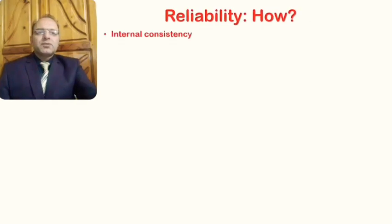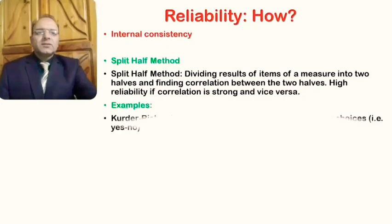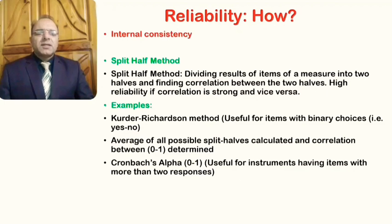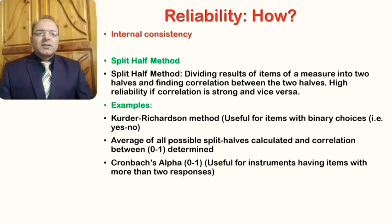Moving on to the how question: how do we find that a particular instrument has internal consistency? There are a number of ways to establish internal reliability. One of the ways is the split-half method, which involves dividing the results or items of a measure into two halves and finding the correlation between the two halves. High reliability is present if the correlation is strong.